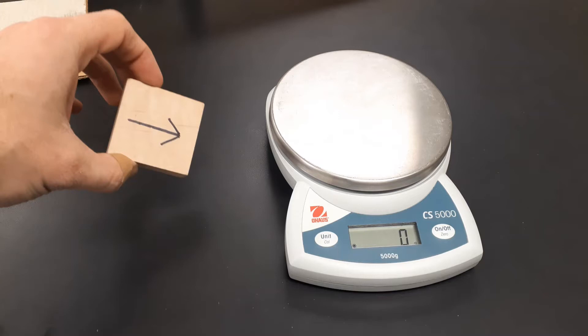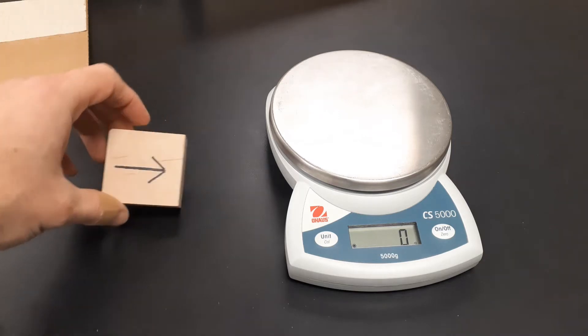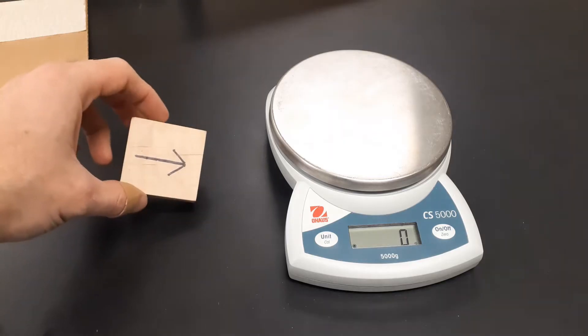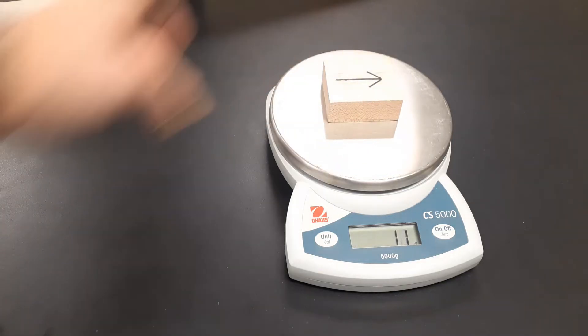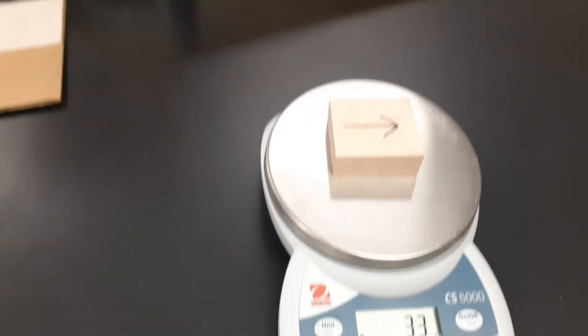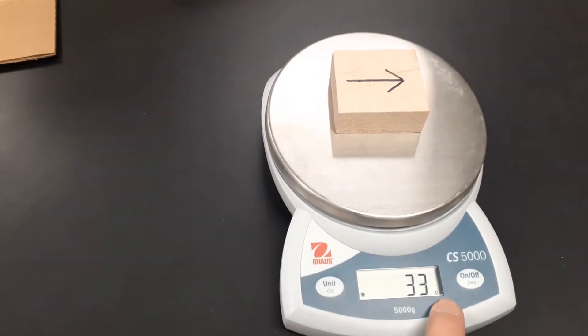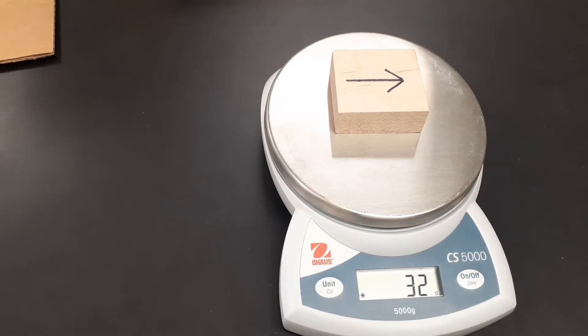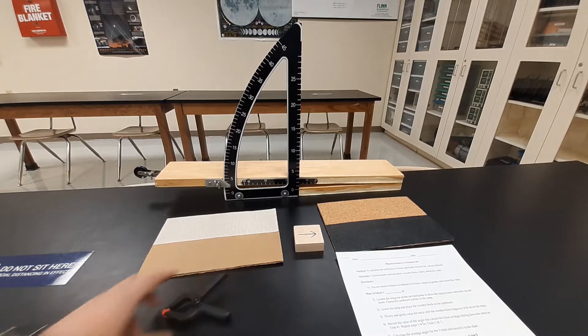The very first thing we're going to do is take our little wooden block. This arrow is drawn out so we'll make sure it's going the same direction every time, because the grain of the wood could have a little impact. Set it on our scale to get our mass here. We've got 33 grams, maybe 32 if it'll make up its mind. 32, 33 grams of mass.